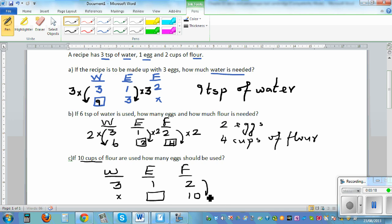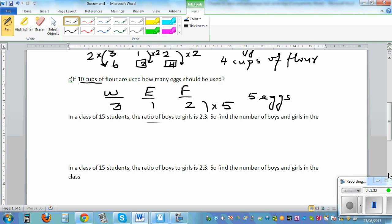Well, this is increasing by a factor of 5. 2 times 5 is 10. So 1 times 5 is 5. So you need 5 eggs. So you just need to know basic times tables. So let's look at one more question.